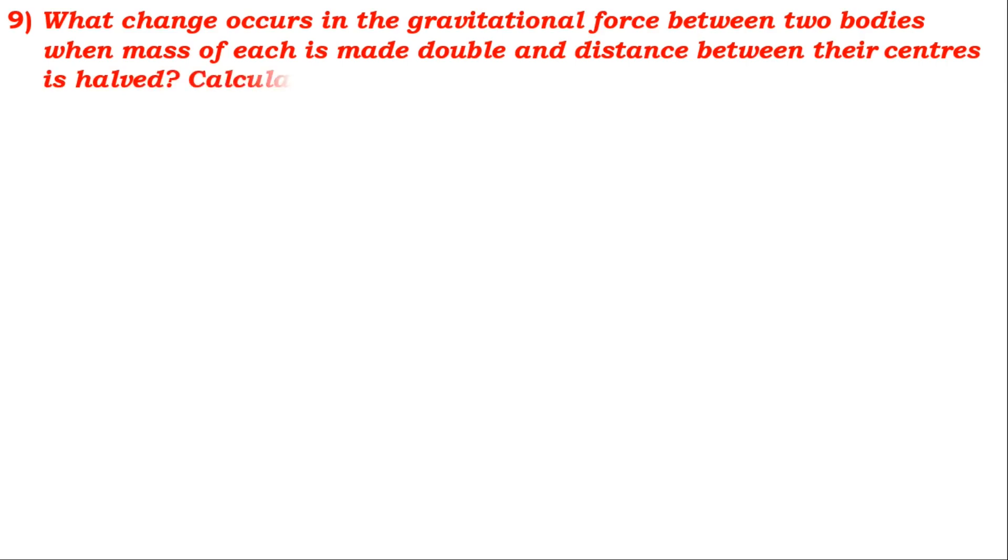What change occurs in the gravitational force between two bodies when mass of each is made double and distance between their centers is halved? There is no numerical value given, but you have to determine what change occurs in this condition.